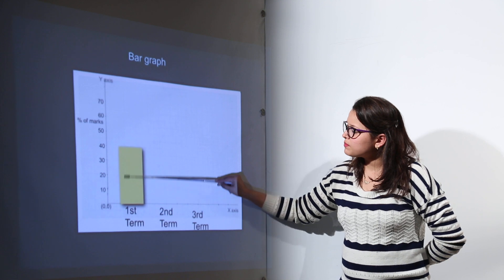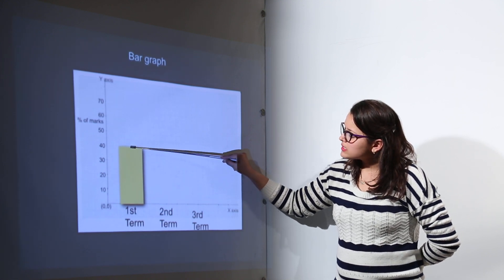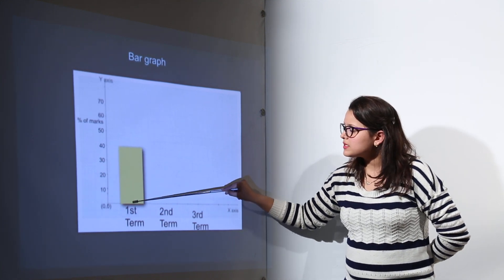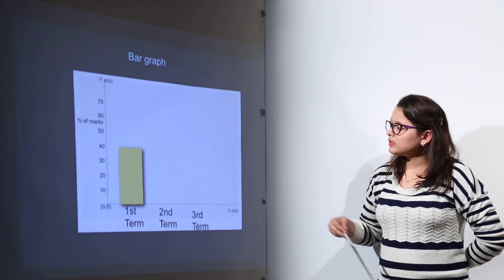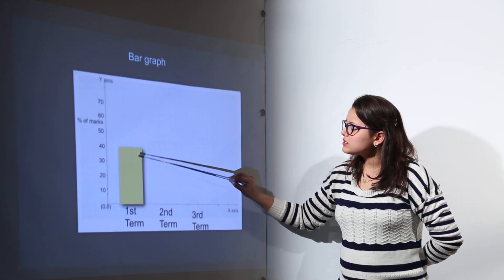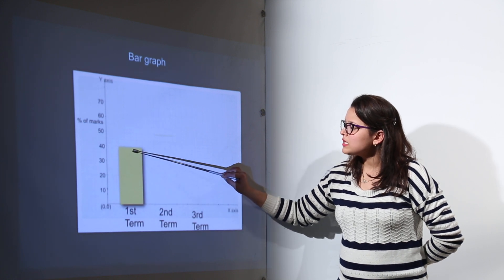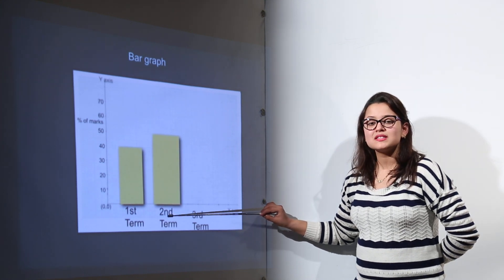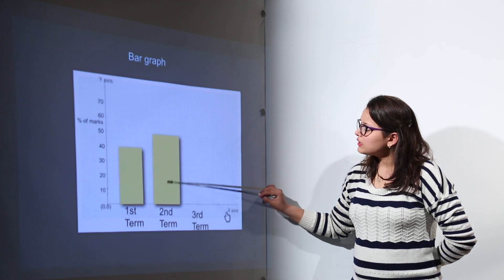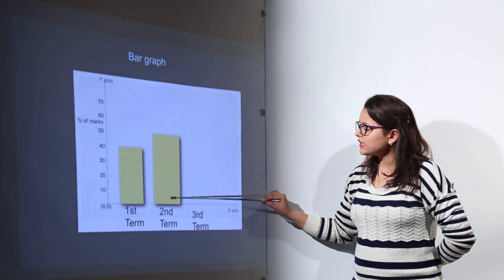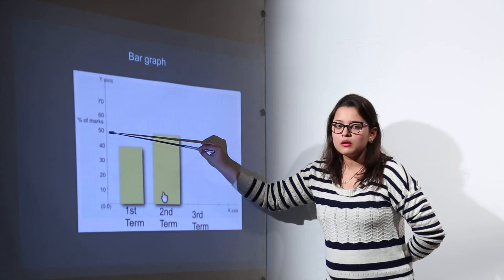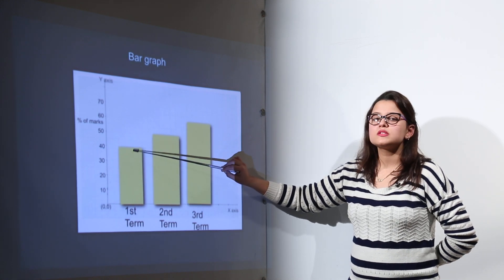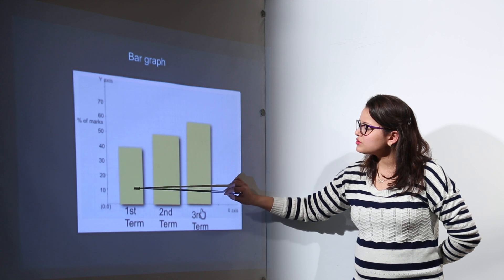The first bar is depicting that the student secured 40% marks — this line is representing the 40% mark. So in the first term the student secured 40% marks. The graph clearly represents that the student's marks in the first term are 40%. For the second term, the student secured 50% marks. So the bar you draw for the second term will go up to the 50% mark. You can clearly identify that in the first term the student was securing lesser marks, while in the second term the student upgraded.